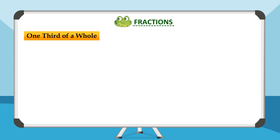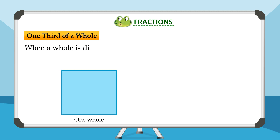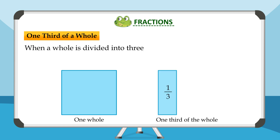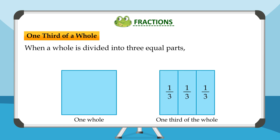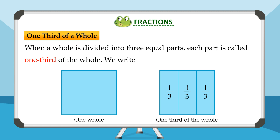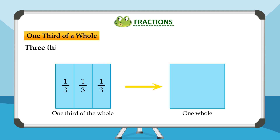One-third of a whole: when a whole is divided into three equal parts, each part is called one-third of the whole. We write one-third as one upon three. Three-thirds make a whole.